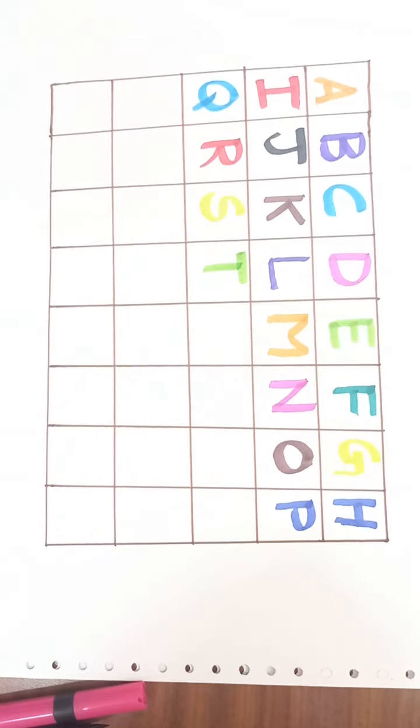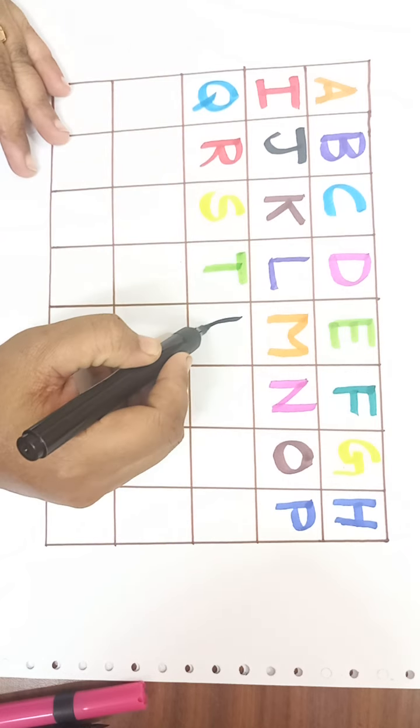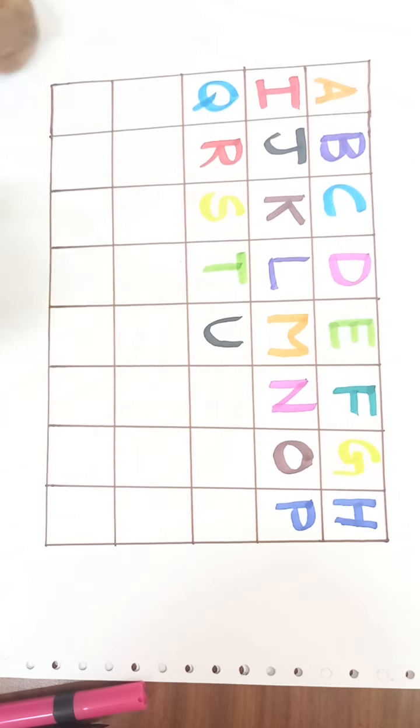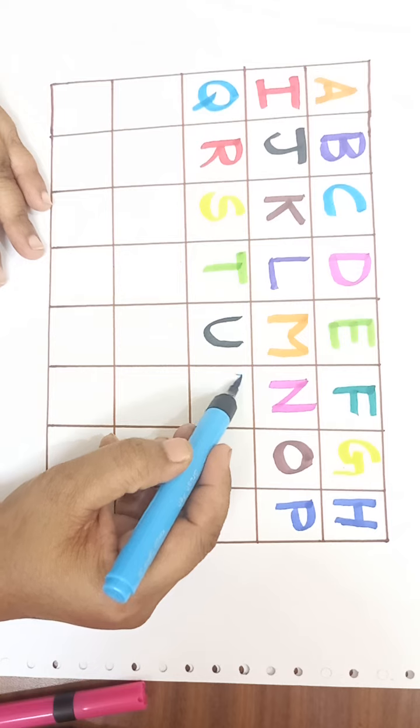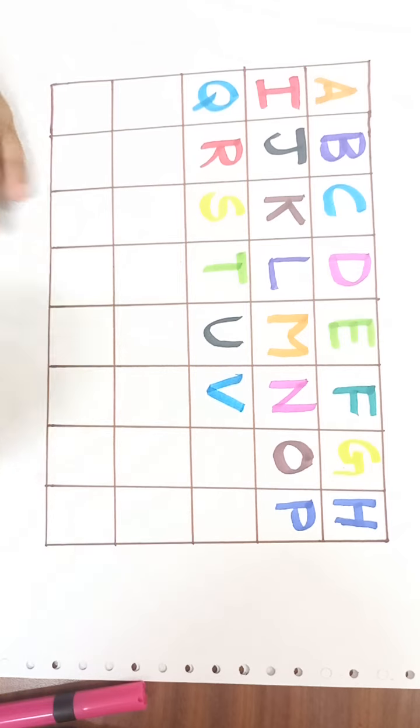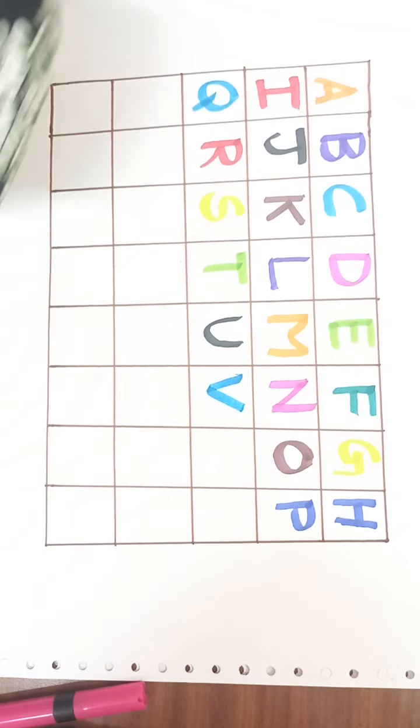Black color. U. U for uniform. U-N-I-F-O-R-M. Uniform. Sky blue color. V. V for van. V-A-N, van.